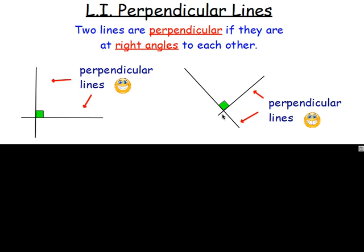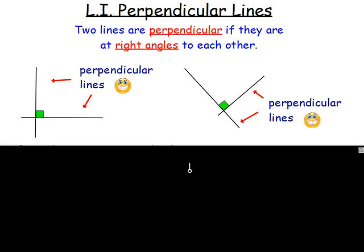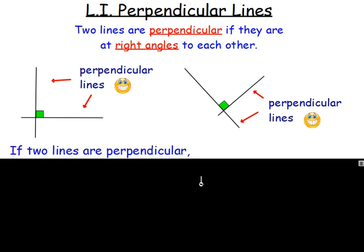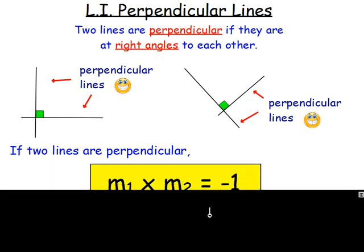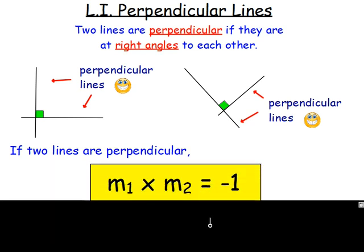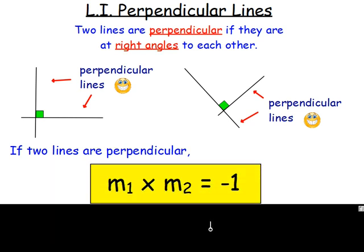What's so special about them? Well, if you work out the gradients of two lines that are perpendicular and you multiply them together, you will always get negative one.